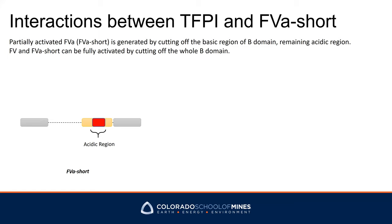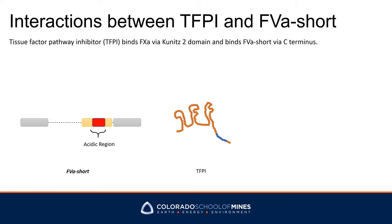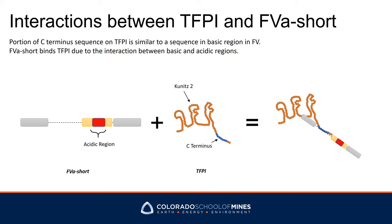Tissue factor pathway inhibitor, TFPI, has three Kunitz domains and a C-terminus, where Kunitz 2 can inhibit factor 10a and the C-terminus can bind to factor 5a short. The reason why TFPI and factor 5a short can bind each other is that the C-terminus of TFPI has almost the same sequence as the basic region of factor 5a short. Therefore, the C-terminus of TFPI and factor 5a short bind each other through the interaction between basic and acidic regions.